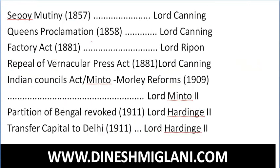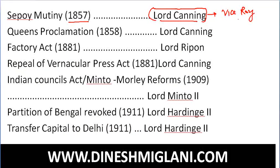The Sepoy Mutiny of 1857 occurred during the time of Lord Canning. After the mutiny, Lord Canning became the first Viceroy of India. Queen's Proclamation was also made in 1858 during the time period of Lord Canning.